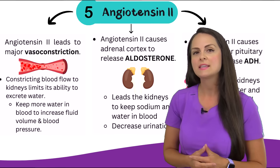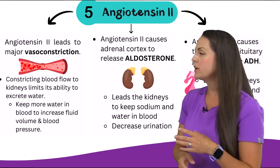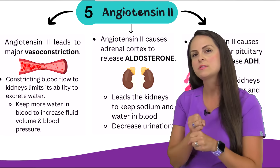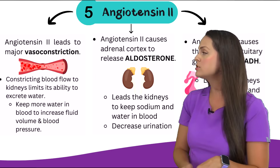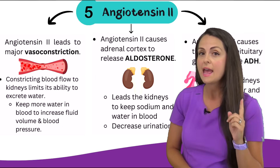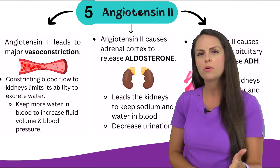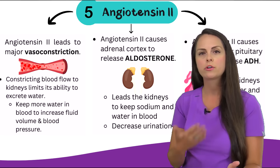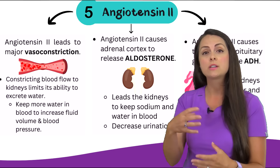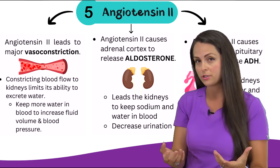One thing angiotensin 2 does is it causes vasoconstriction, so we're going to get narrowing of those vessels. When we narrow those vessels, it's actually going to constrict the blood flow to the kidneys and limit its ability to excrete water, which is what we want, because we want that water to stay in the body right now so we can increase our blood volume, hence increase our blood pressure.